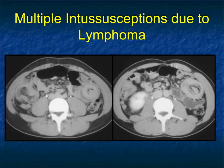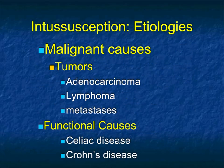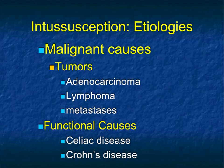One of the other things when speaking about tumors causing obstruction is intussusception. Intussusception can be due to benign lesions like lipomas, or in this case lymphoma — when I see lymphoma, there are often multiple intussusceptions. Also, metastases like from melanoma can give multiple intussusceptions. Neoplasms account for about 70% of intussusceptions in adults. Adult intussusception of the small intestine is usually caused by benign tumors, whereas intussusception of the large bowel is caused by malignant tumors — but it can be both ways. We seem to be running out of time, so let's pick it up right here after a short break.